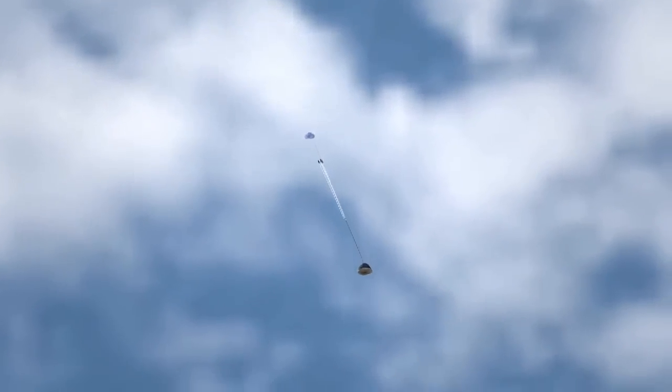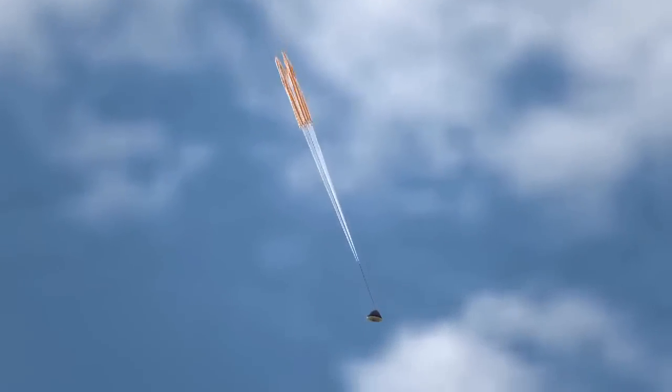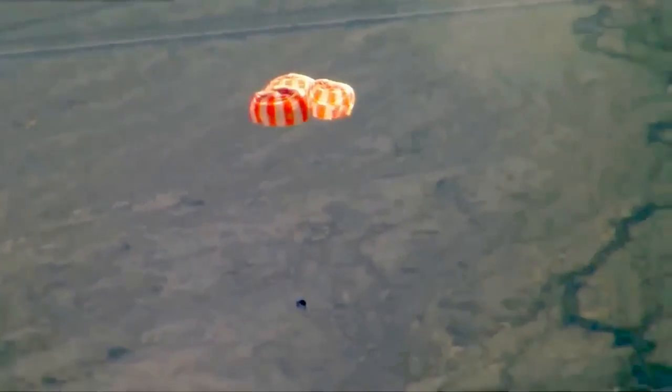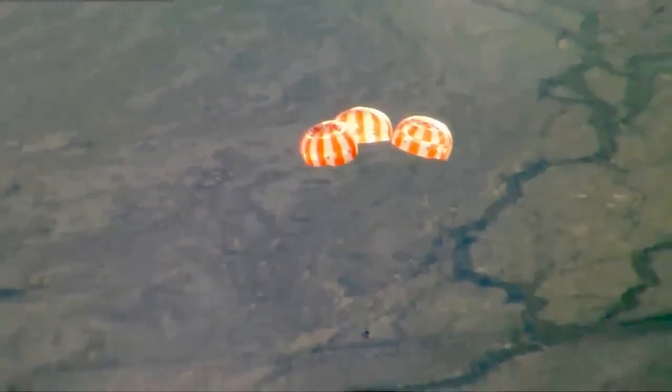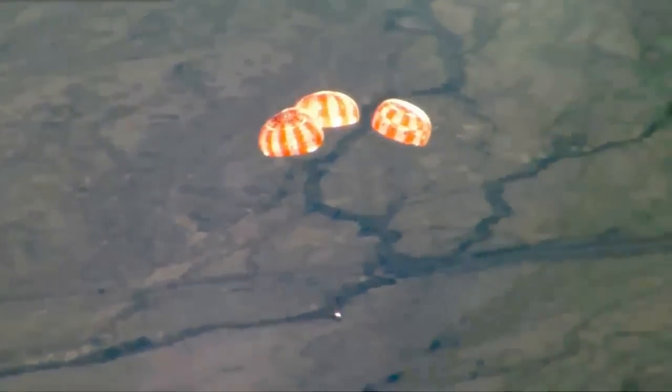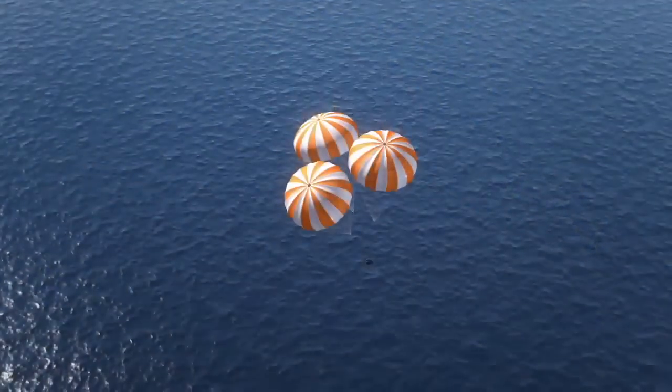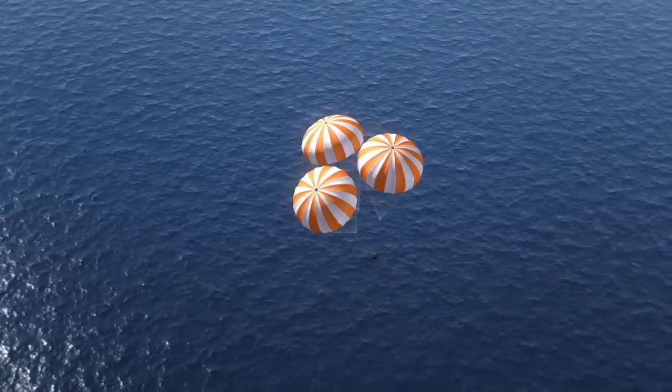Then, the three main parachutes opened. Once fully engaged, this canopy would cover an American football field. It takes parachutes this size and strength to slow our descent to 20 miles per hour. And then, splashdown.